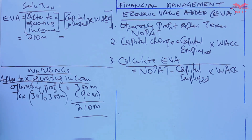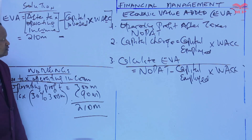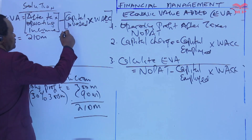The capital employed is simply the total assets, which is 400 million.